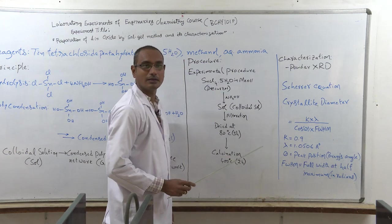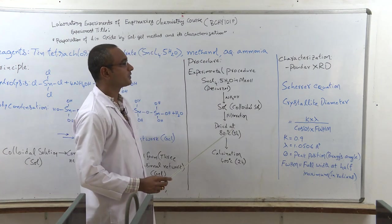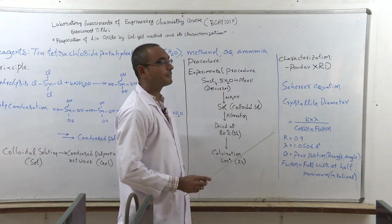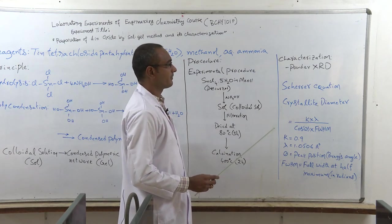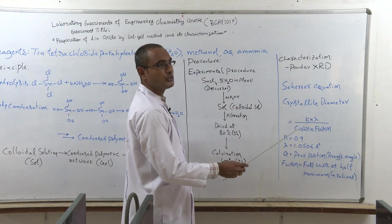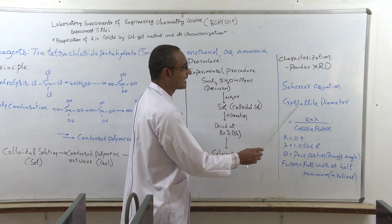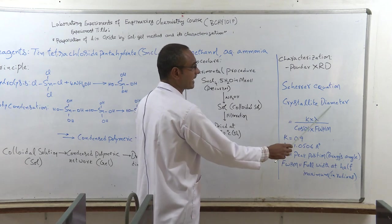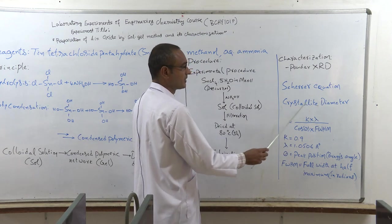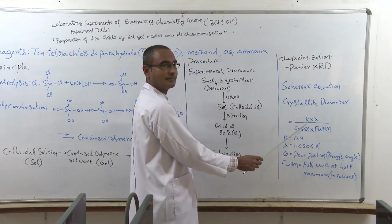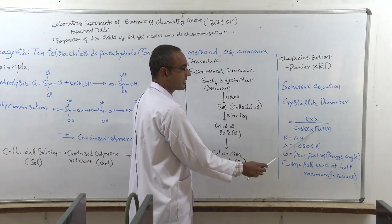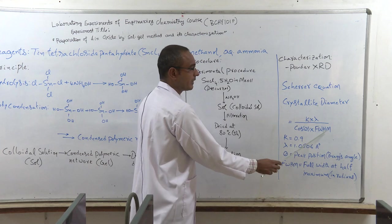So we have to record the diffractogram using this powder XRD instrument. The data obtained from the powder XRD diffractogram, we are going to use to calculate the crystallite diameter. So the crystallite diameter we can get it from the Scherrer equation.